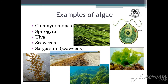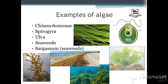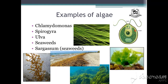Now, examples of algae: Chlamydomonas is unicellular — single celled. Spirogyra is multicellular. Ulva — these are seaweeds of green colour. Sargassum seaweeds are brown algae and are very large in size, so they are different from normal seaweeds.